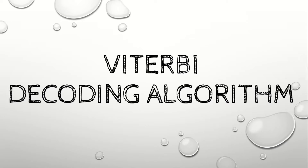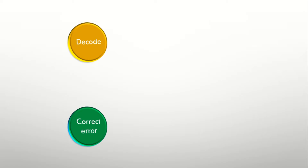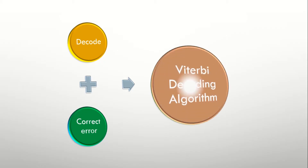Hi everyone. Today we are going to see the Viterbi decoding algorithm. Normally in communication, the message bits are first encoded from the transmitter side and then transmitted. At the receiver, this is only the ideal case. Practically, during transmission the coded sequence may be affected by noise or other external factors and we receive the code with errors. So we need to decode the message and also correct the error. We have a powerful tool for this called the Viterbi decoding algorithm.